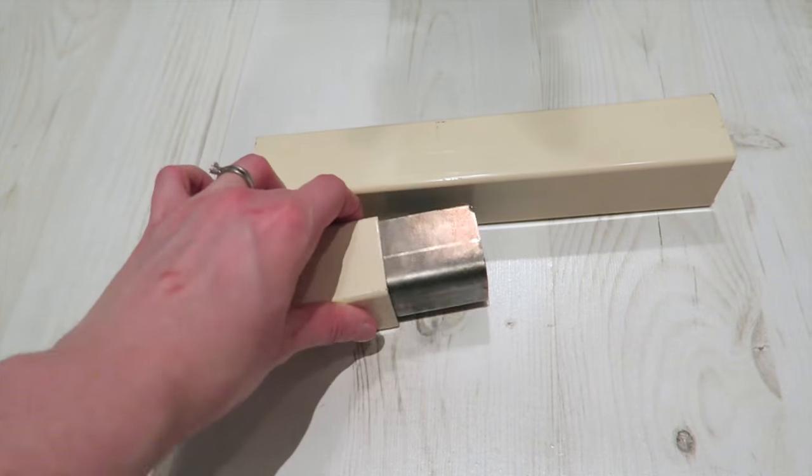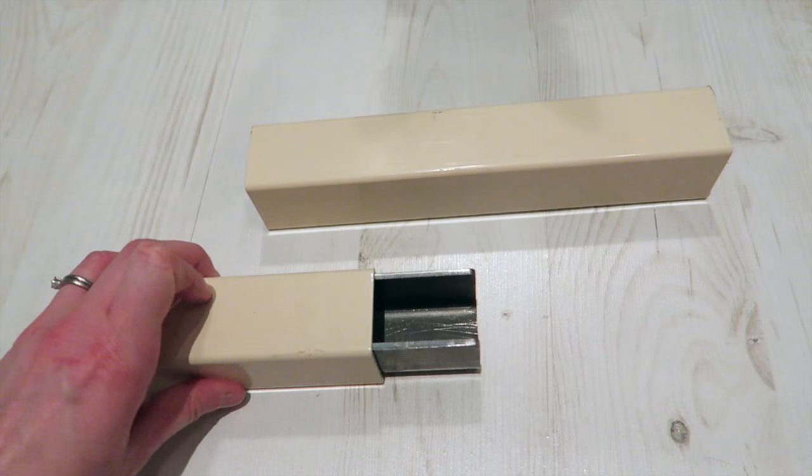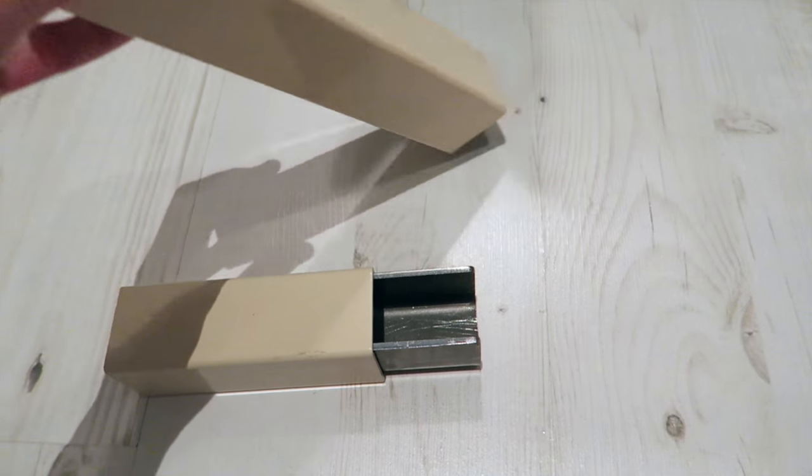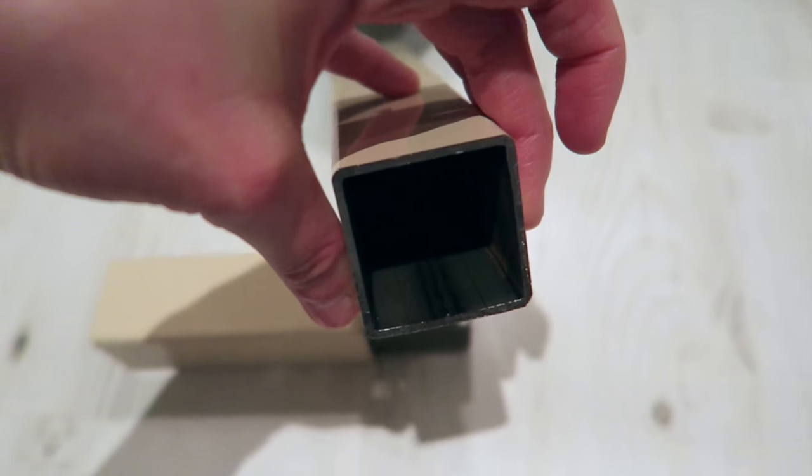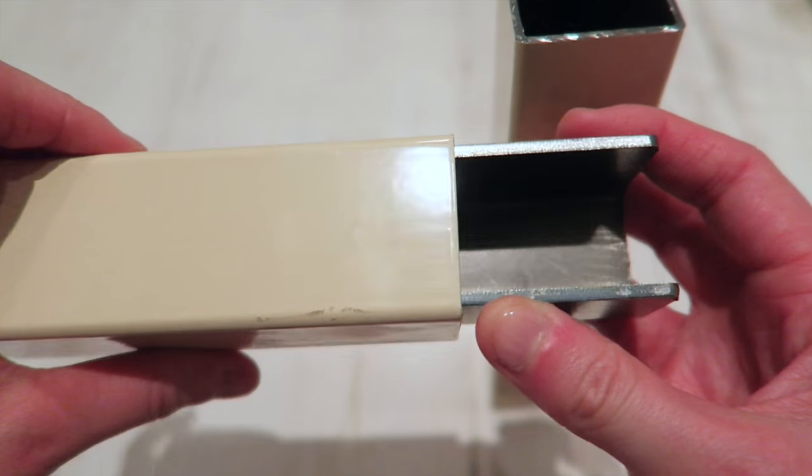Or you might have a situation where both of the bits of the box section are a little bit loose. In that situation, just put a dab of silicone or glue or something just to hold the section in place so it doesn't slip through the bar.